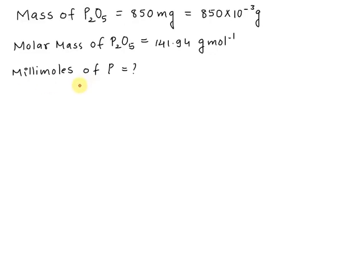In this question, we are given the mass of P₂O₅ equal to 850 milligrams, which is equal to 850 × 10⁻³ grams, or we can write it as 0.85 grams.